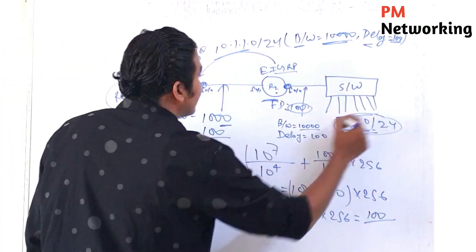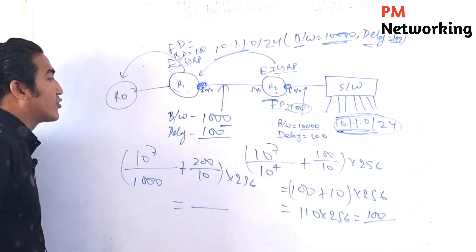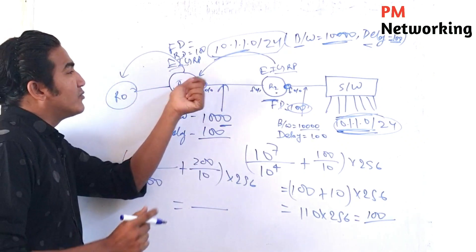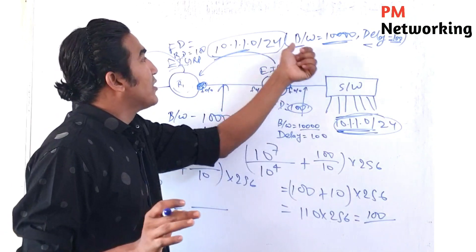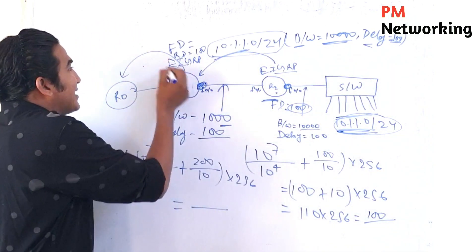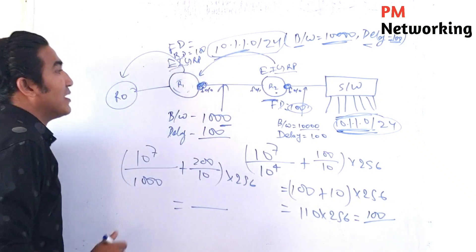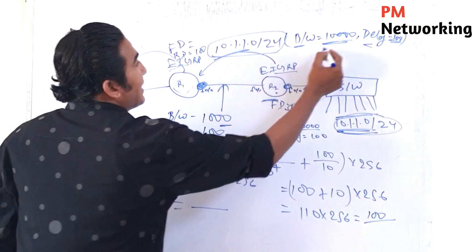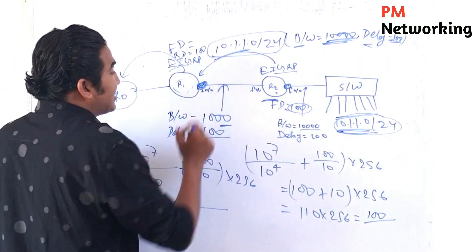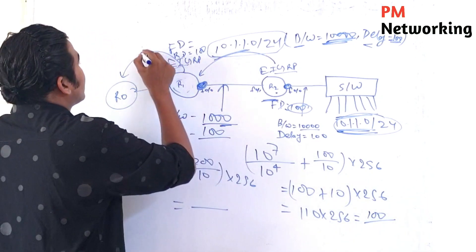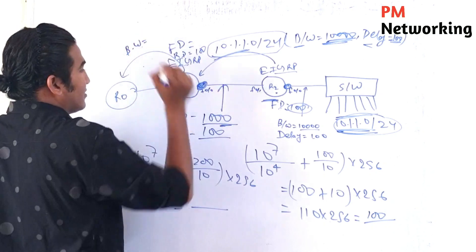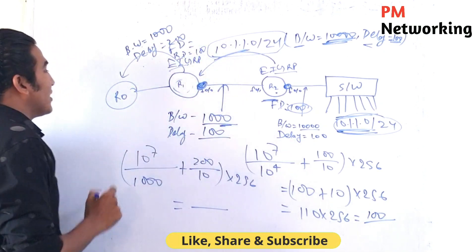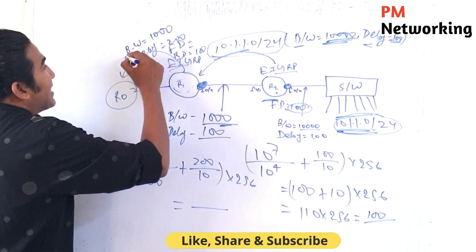Now suppose we add one more router R0. R0 will also calculate the metric for this network. R1 will send an update to R0 containing the prefix with bandwidth and delay. R1 carries the least bandwidth in the update, which is 1,000 since that was the least bandwidth seen so far. The total delay R1 carries is 200. Suppose the bandwidth of R0's receiving interface is 100 and its delay is 10.